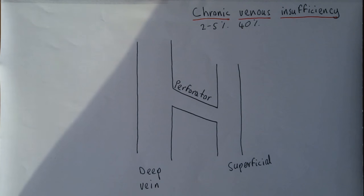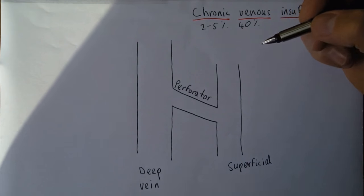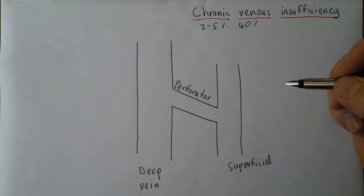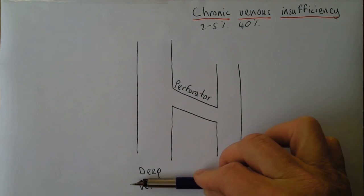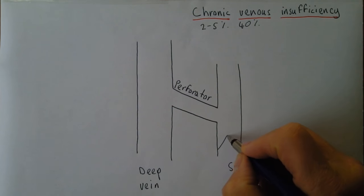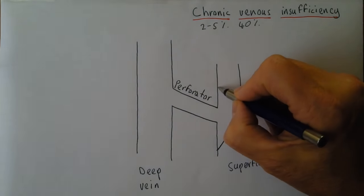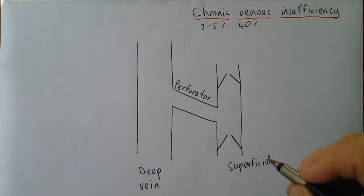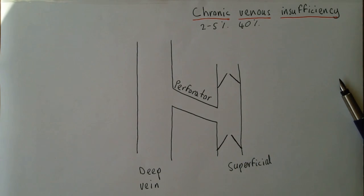We need to think about our basic anatomy and physiology. We have three main systems of veins in the limbs: the superficial, the deep, and the perforator veins. The blood needs to move from the periphery back up to the center of the body, and to ensure one-way flow the veins have valves. These valves are bicuspid — they have two cusps — and they will let the blood flow upward, but then the valves will swing shut if there's any back pressure, ensuring one-way flow of blood.